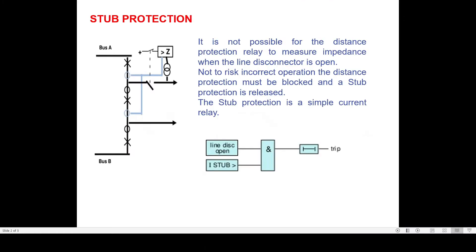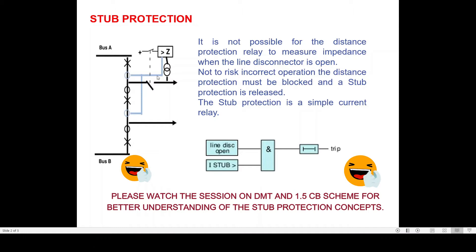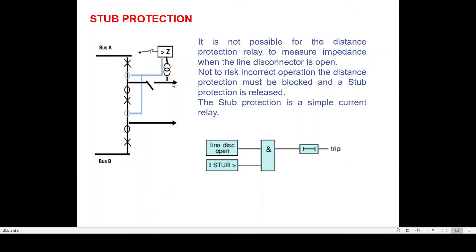If you see here, this is the one-and-a-half breaker scheme which I have already explained in the last session. There are three breakers connecting to two buses, and two feeders are emanating from two of the main buses — one from here and one from here — and our focus is on the first feeder.